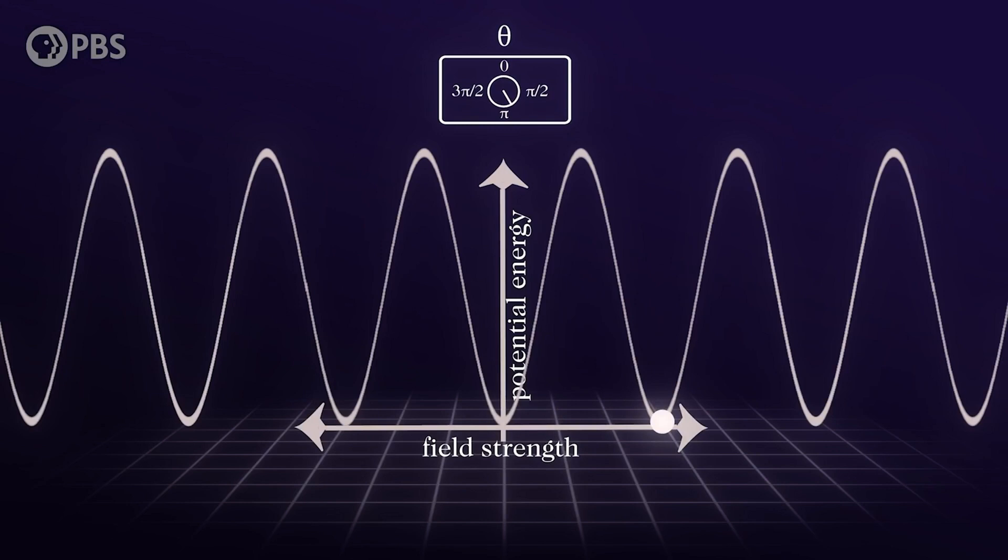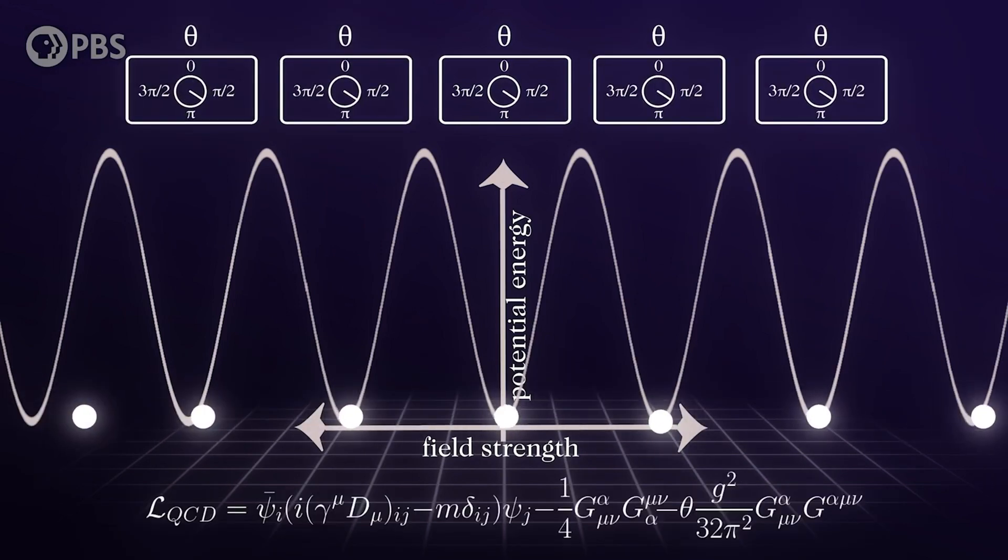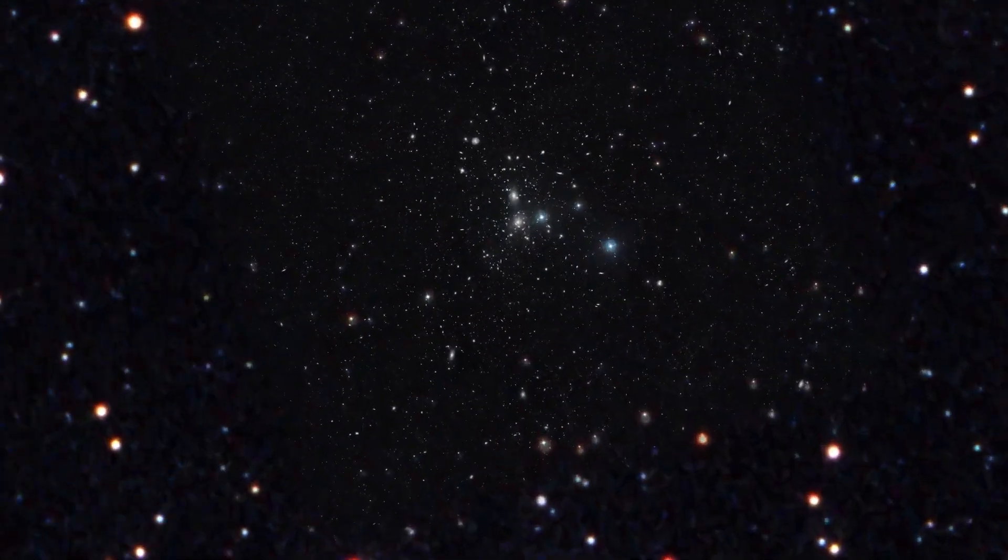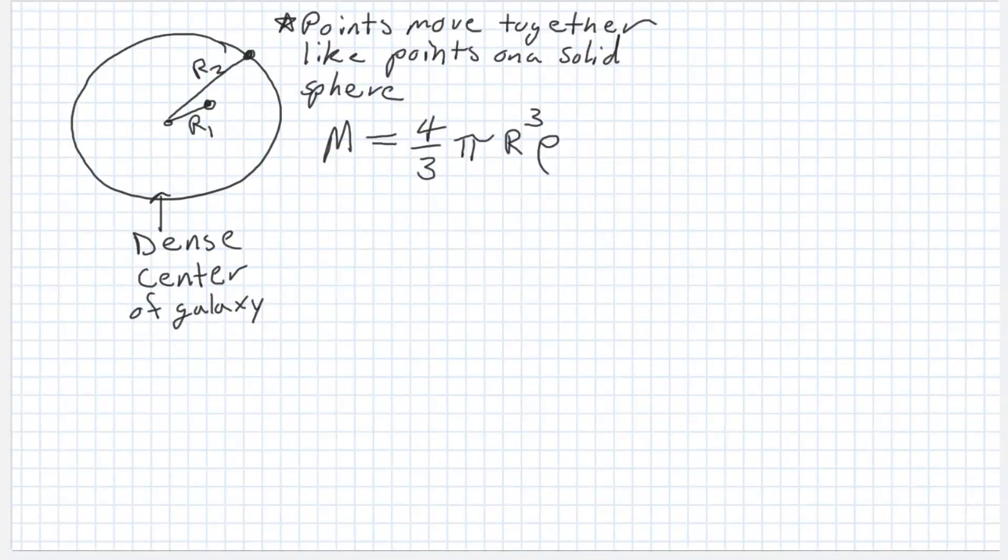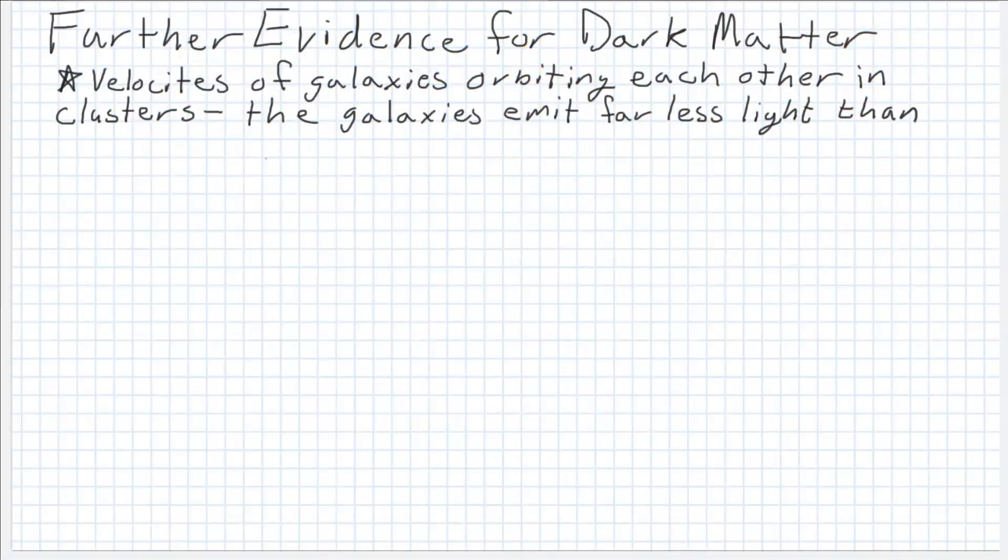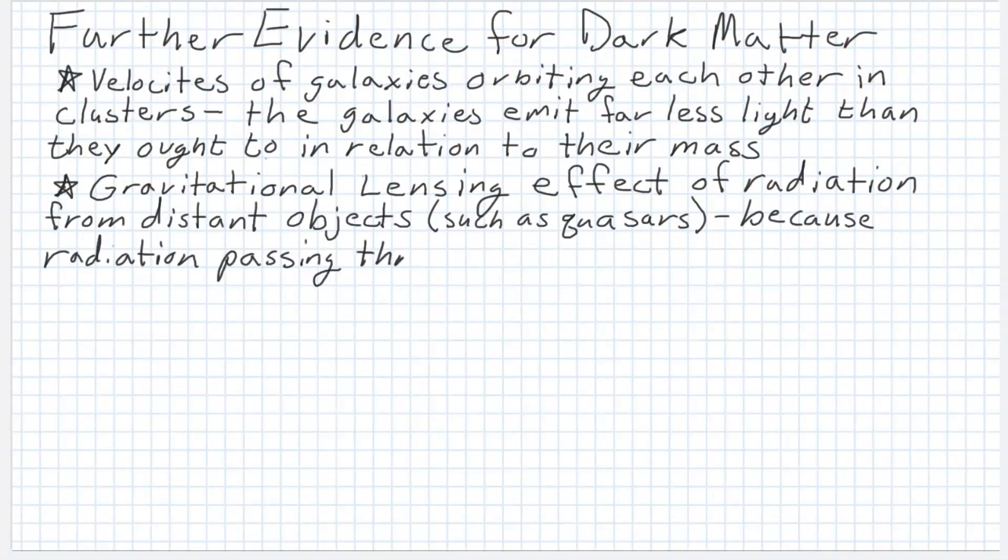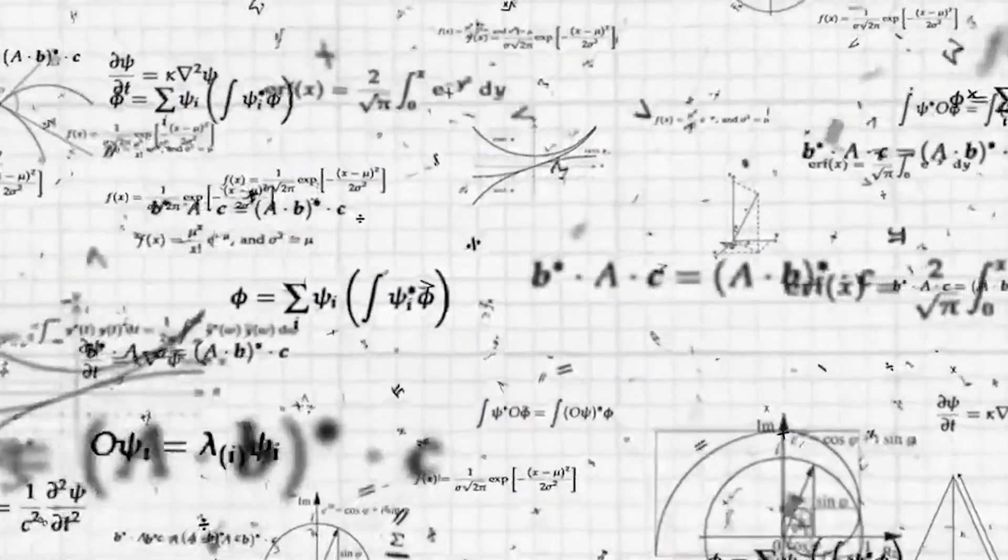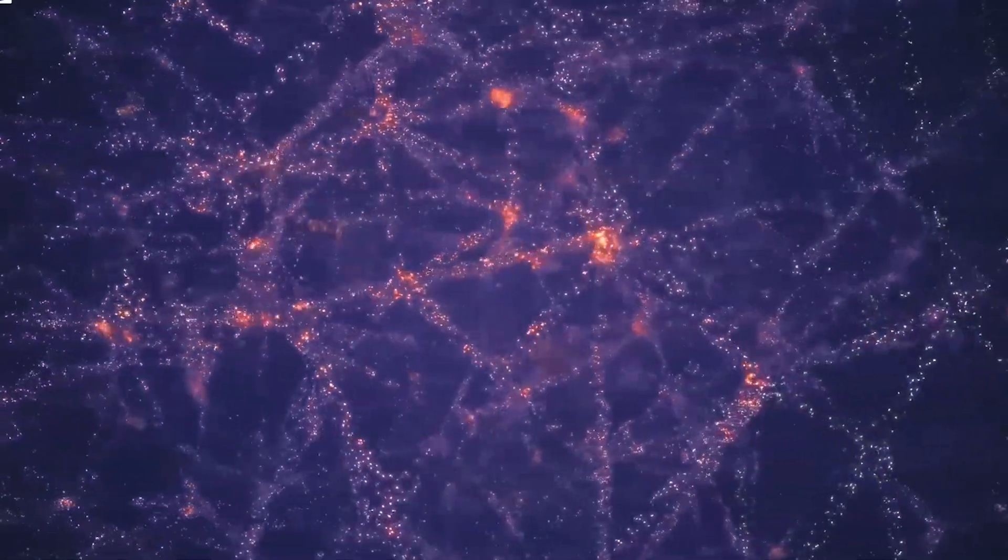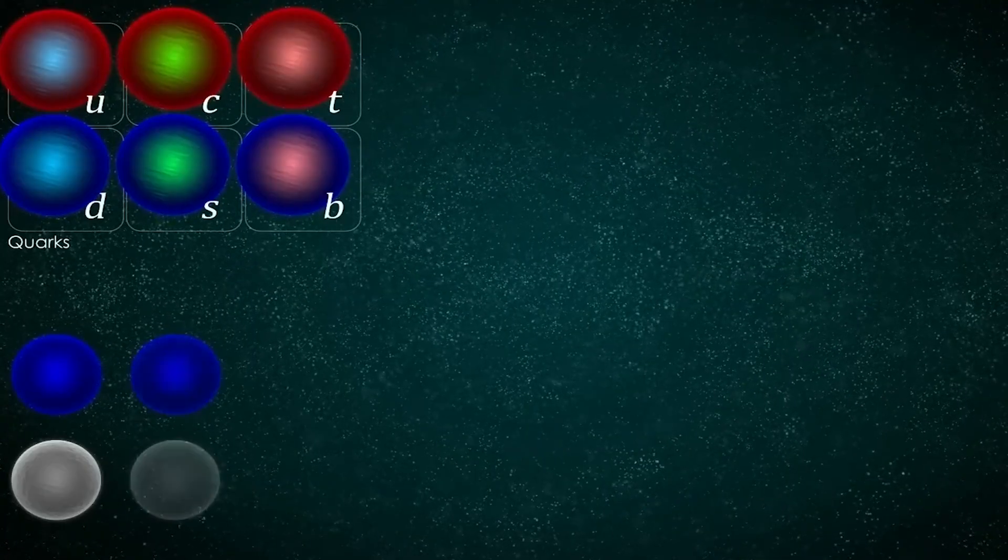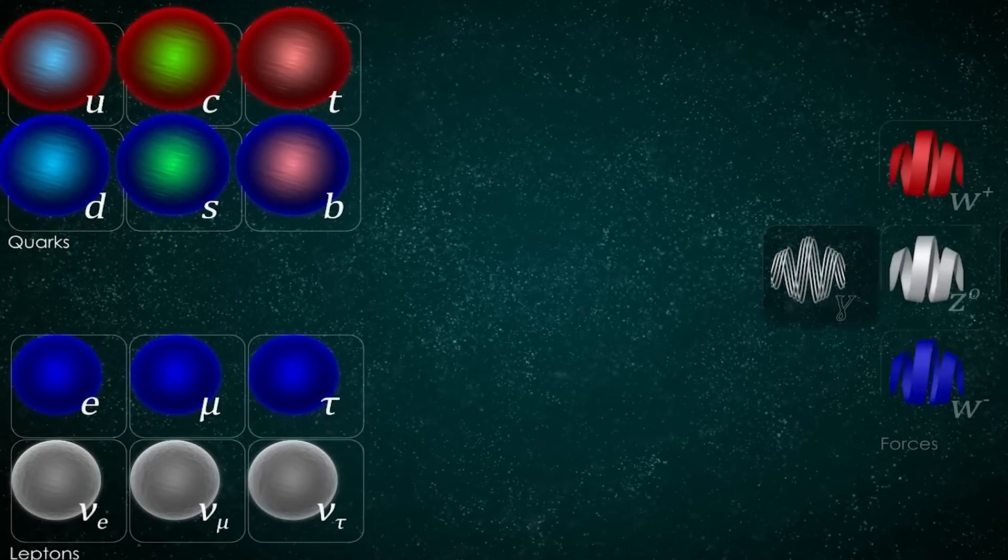In 1933, Swiss astronomer Fritz Zwicky stumbled upon something concerning during his study of galaxy clusters. While observing these clusters, Zwicky noted that the total mass of matter didn't account for the total mass he calculated based on the motion of the galaxies held together by gravitational force. Either he had discovered that gravity was broken or he had stumbled upon something else. Without any reason to doubt a law so unshakable as gravity, his calculations led to the proposal of a new type of matter. Matter that was unseen.